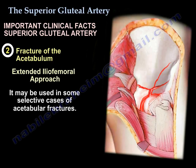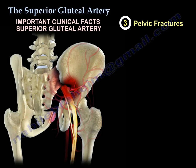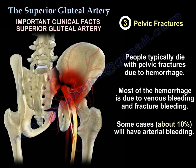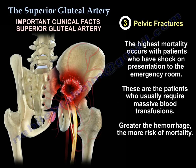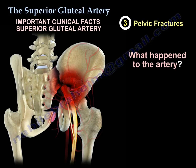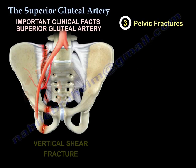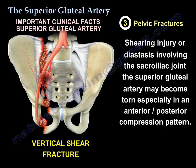The third clinical scenario is pelvic fracture. The superior gluteal artery is critically important here because people die from pelvic fractures due to hemorrhage. Most hemorrhage is venous bleeding and fracture bleeding, but approximately 10% of cases involve arterial bleeding. The highest mortality occurs in patients who present in shock to the emergency room, and these patients require massive blood transfusions — the greater the hemorrhage, the higher the mortality. Shearing injury or diastasis of the sacroiliac joint can tear the artery.